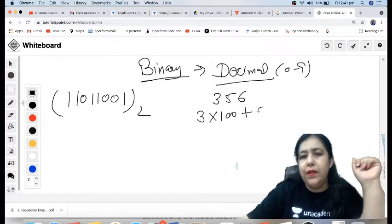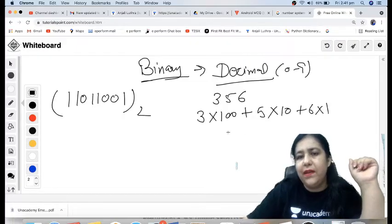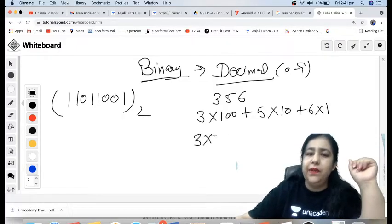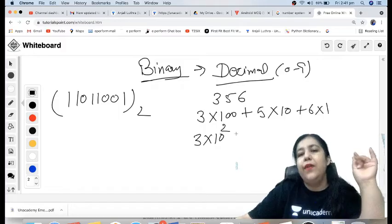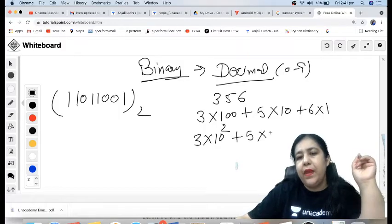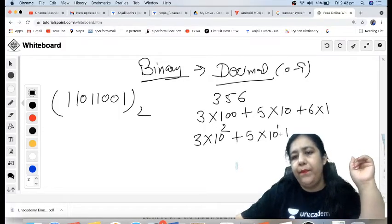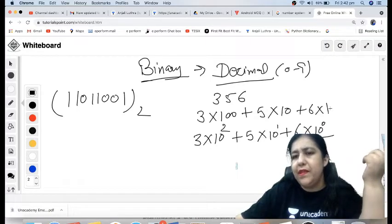3 into 100 plus 5 into 10 plus 6 into 1. This is how we expand it. If we see it further, you can write it like 3 into 10 raised to the power 2, 5 into 10 raised to the power 1, 6 into 10 raised to the power 0. And any number raised to the power 0 is 1.